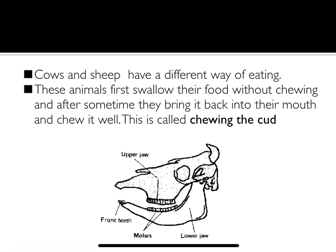Animals like cows and sheep have a different way of eating. They first swallow their food without chewing it, and after some time they bring it back into their mouth and chew it well. This is called chewing the cud. Cud-chewing animals are also called ruminants.